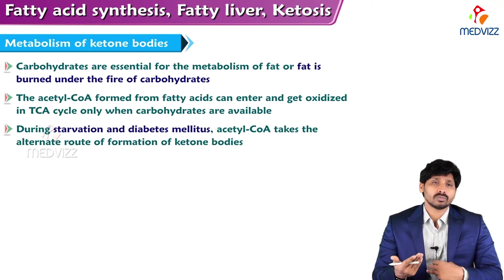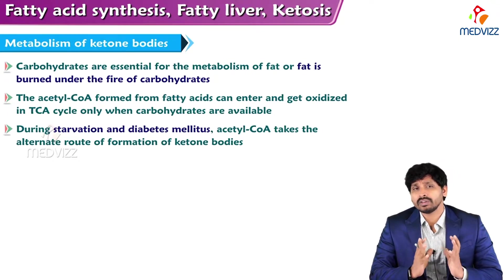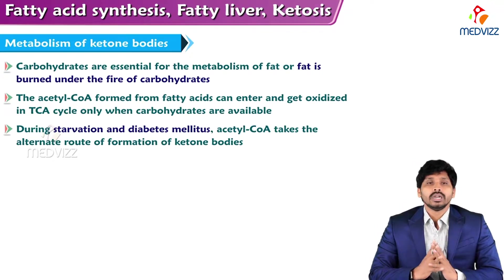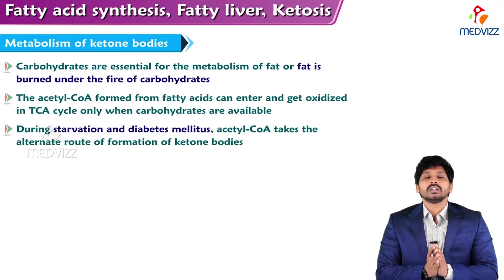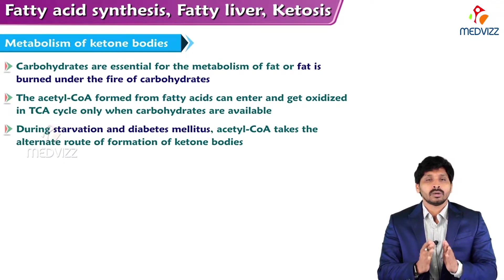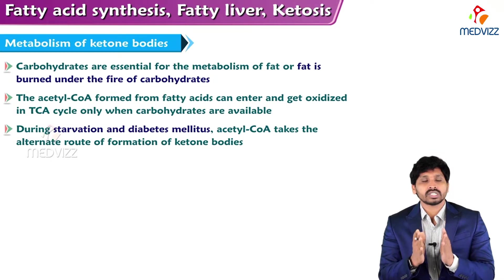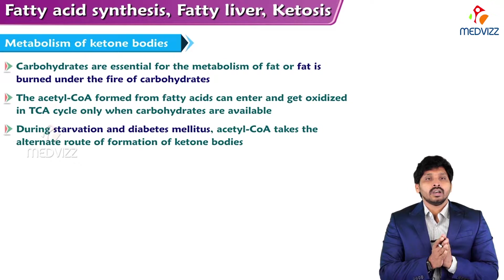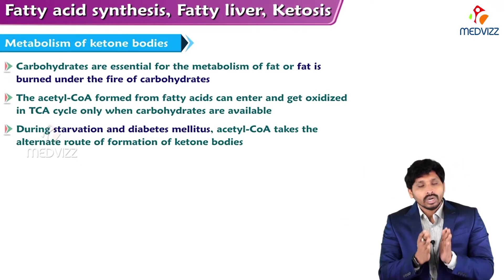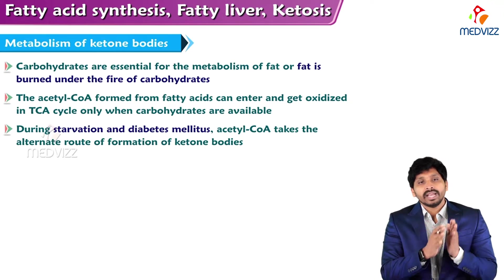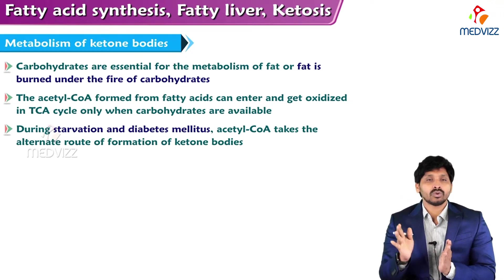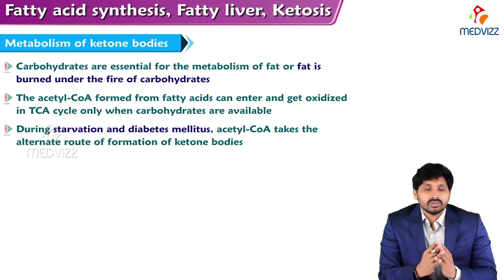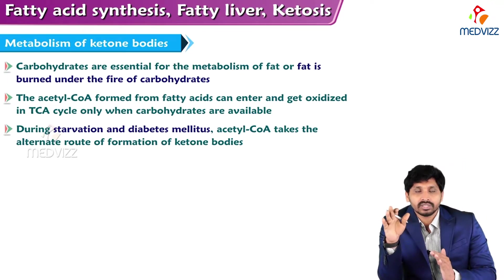In that condition, excessive lipid breakdown occurs. This lipid breakdown leads to excessive production of acetyl CoA. This acetyl CoA cannot enter the TCA cycle because the intermediates of TCA cycle are limited. For example, both oxaloacetate and acetyl CoA are required to start the TCA cycle. If there is only 50 units of oxaloacetate and 100 units of acetyl CoA coming in, only 50 acetyl CoA can be accommodated.